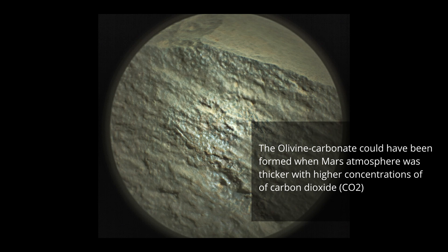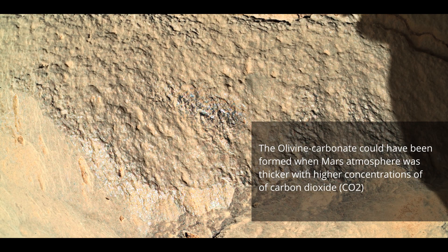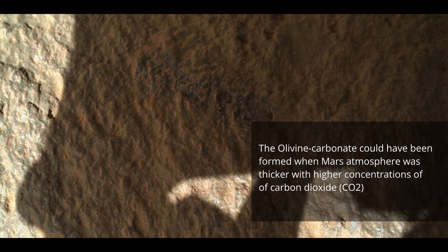The olivine carbonate could have been formed when Mars' atmosphere was thicker, with higher concentrations of carbon dioxide.